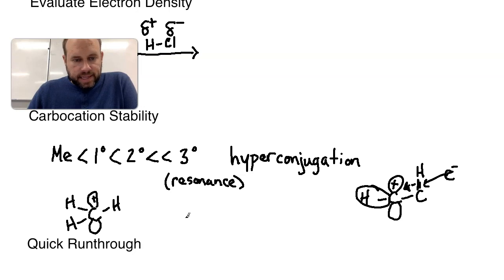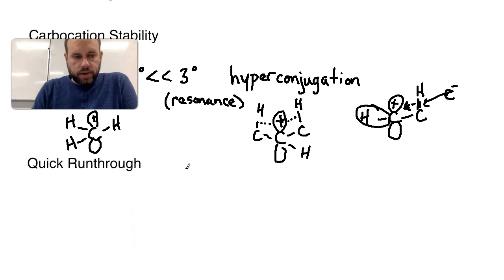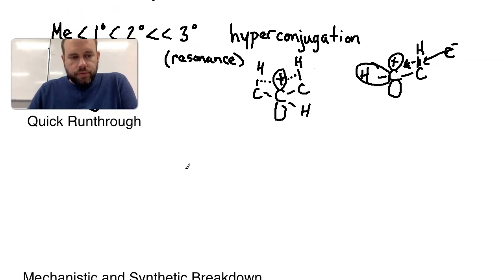However, if I have something that's secondary, this carbocation would receive hyperconjugation from two of its neighbors. So here's one, here's two, and then it could have just a hydrogen here. So it would receive stability from this alignment and it would also receive stability from this alignment. Hopefully you can see, as we continue to build up the hydrocarbons around the carbocation, we increase its stability and likelihood of forming due to hyperconjugation. And that is a very important premise for understanding the reaction we are going to be going through here.